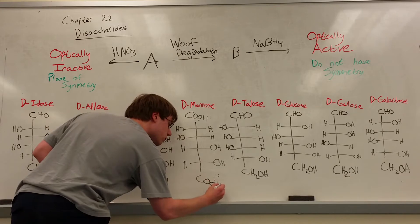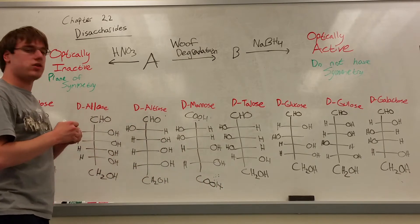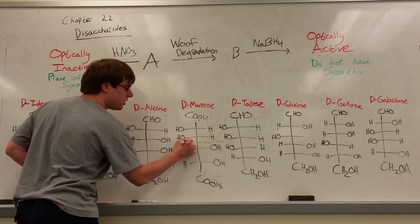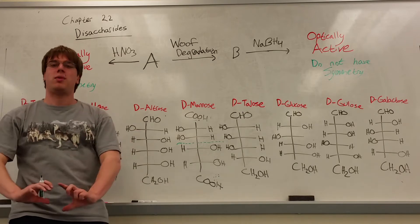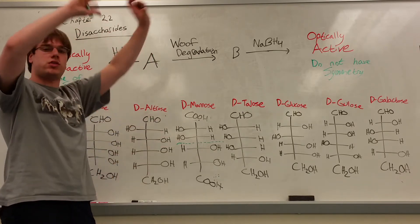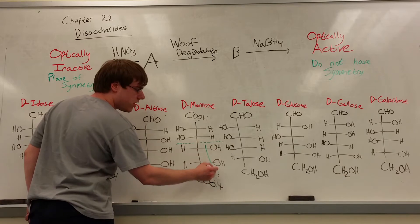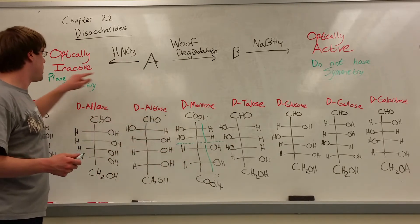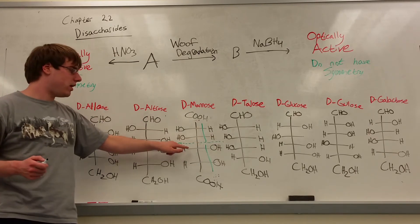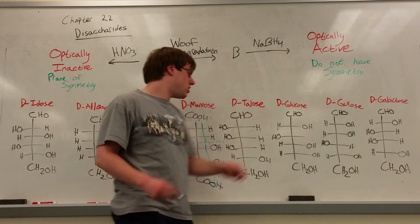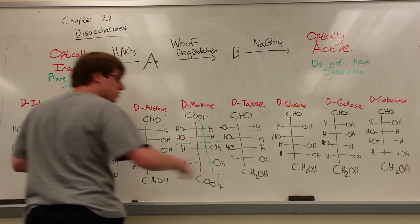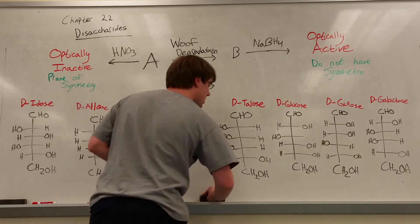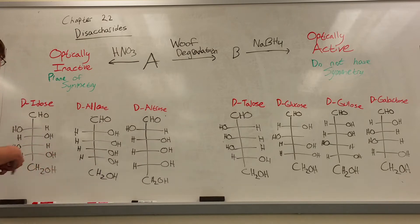Now that both bookends are the same, we draw a dotted line through the center and check if the OHs on the bottom half are on the same side as the OHs on the top half. For D-mannose, there are two OHs on the right on one half but not the other — no plane of symmetry, so it's optically active. D-mannose is ruled out.